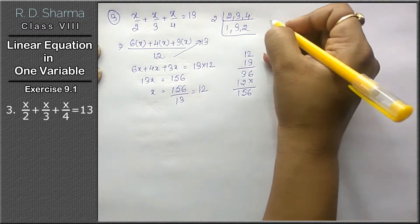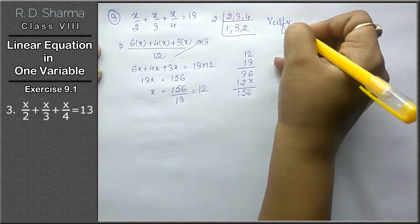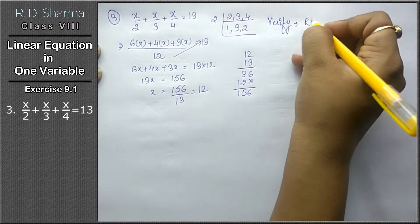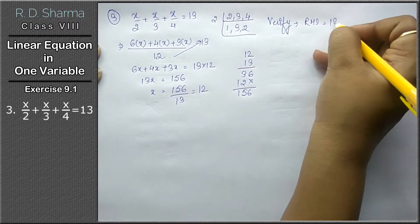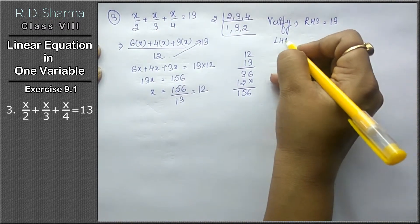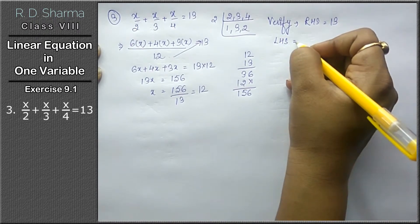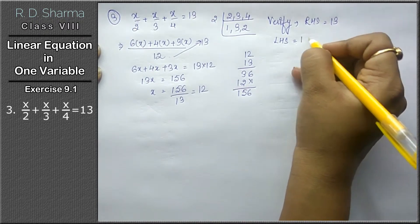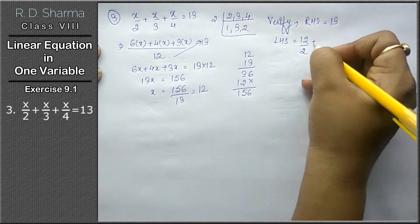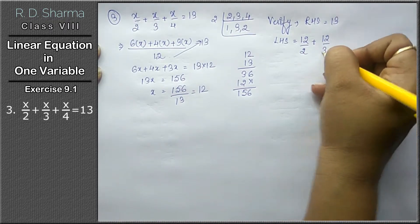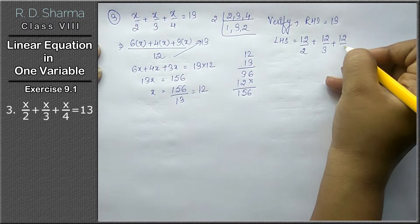Now verification. On the right hand side we have given 13. Now we have to prove the left hand side equals 13. We now have x value 12. So 12 upon 2 plus 12 upon 3 plus 12 upon 4.